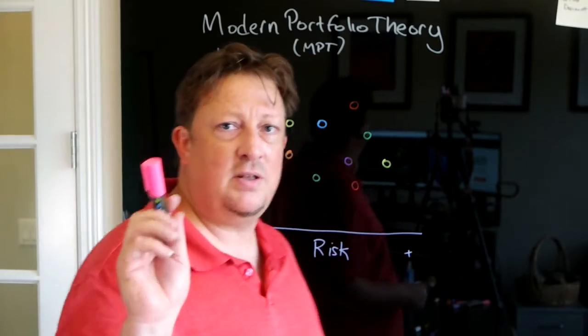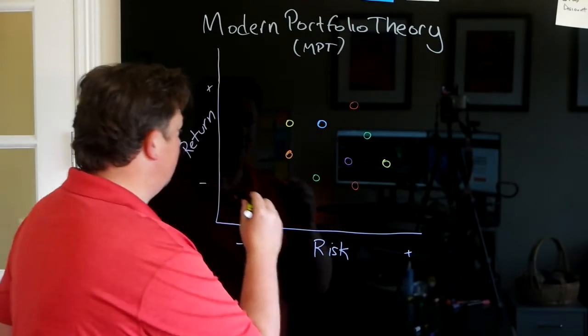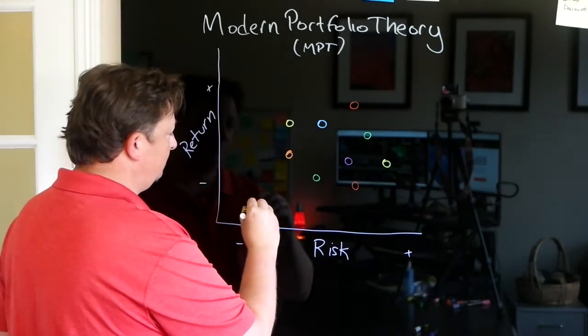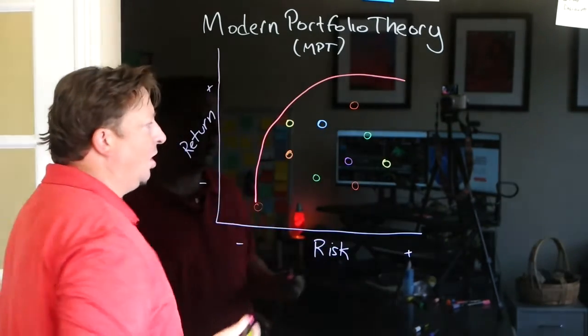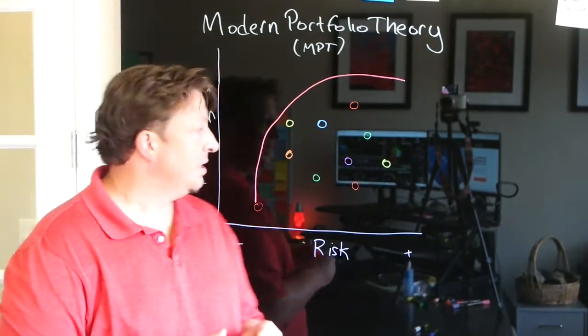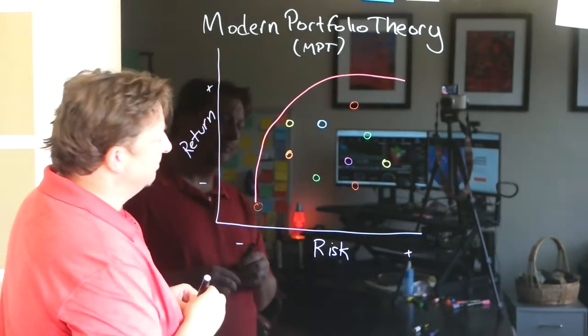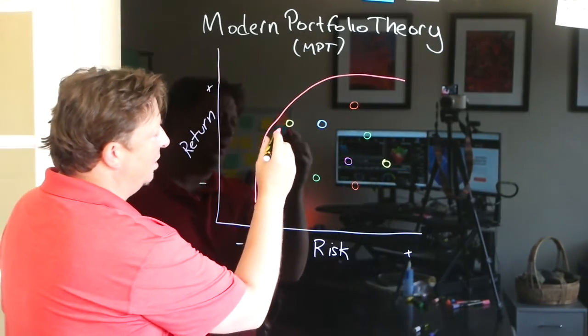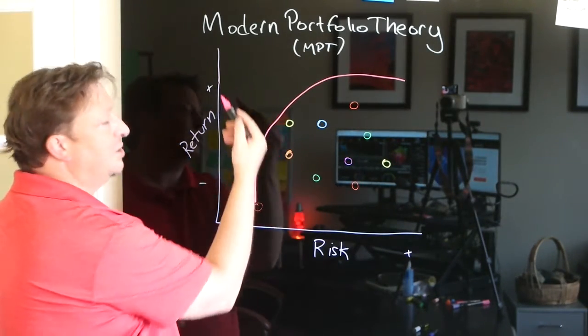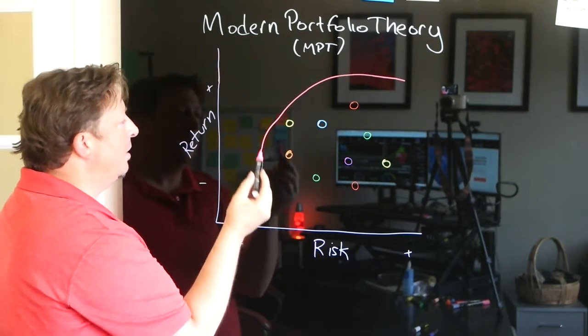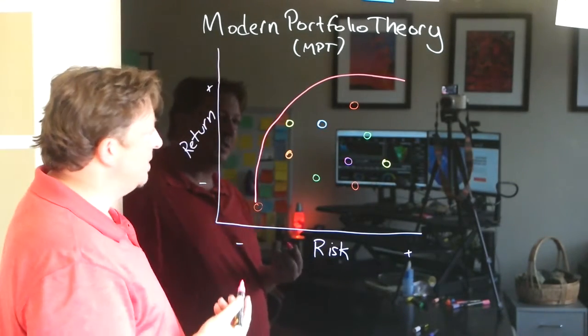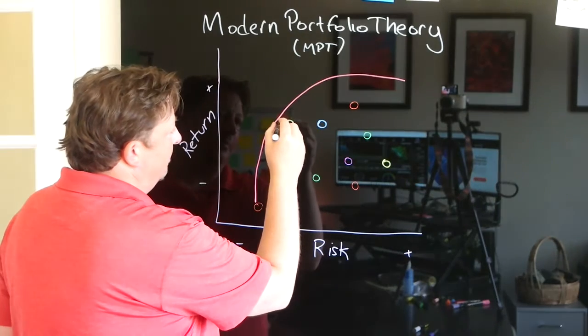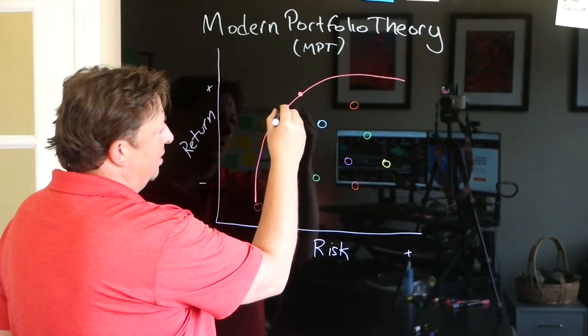You can see it using the Efficient Frontier. So the Efficient Frontier is an arc. It looks something like this. And you can see that this arc extends out further in the direction that we want to go than any of the individual assets do.